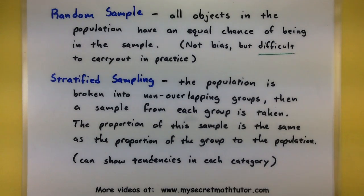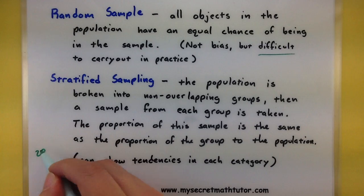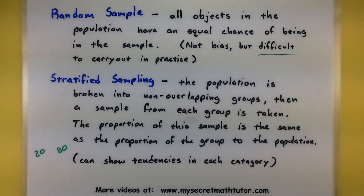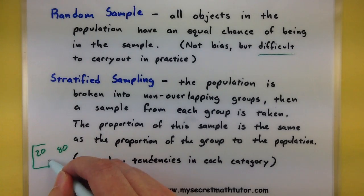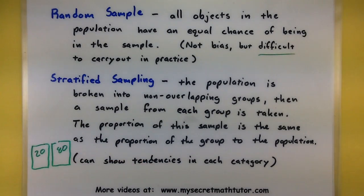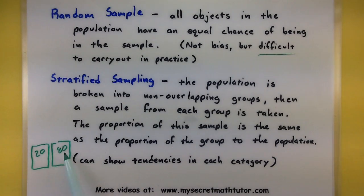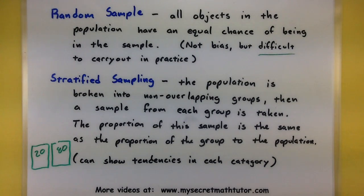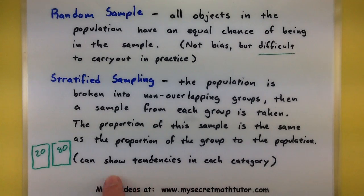Say we had a population of one hundred things, and we broke it into two groups — one group had twenty, and the other group had eighty. When I go to look at these two groups, what I'm going to do is make sure that if I choose a portion out of the group of twenty versus a portion out of the group of eighty, the one out of the eighty group is going to be larger. Maybe I want twenty percent and eighty percent from each of these groups, so the proportions are matching up to the entire population. This is a really good type of sampling because it can show tendencies inside each category.